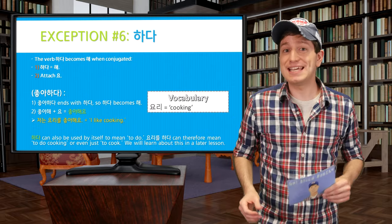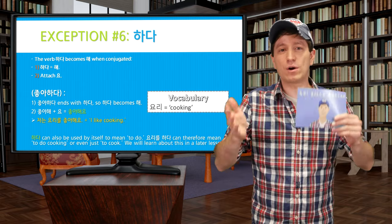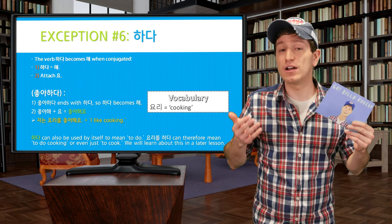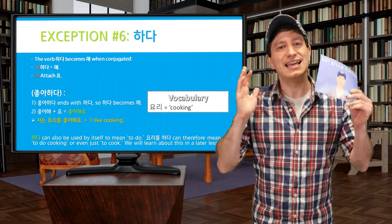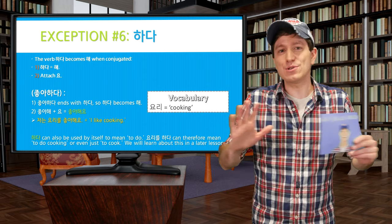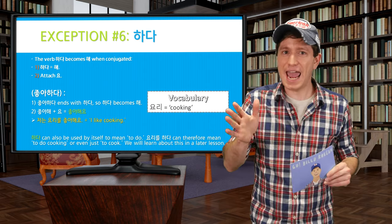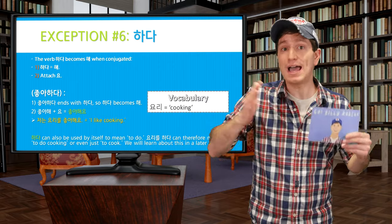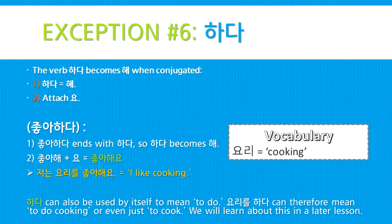The next exception is 하다 — or anytime you have a verb ending with 하다. We've used 좋아하다 (to like) so far. Anytime 하다 is at the end of a verb, it simply conjugates to 해 followed by 요: 해요. That's how we got 좋아해요 from 좋아하다. 하다 becomes 해, so 좋아해 + 요 = 좋아해요. Sentence: 저는 요리를 좋아해요 — I like cooking. 하다 can also mean 'to do,' so 요리를 하다 means 'to do cooking,' which is one way to say 'to cook' in Korean.